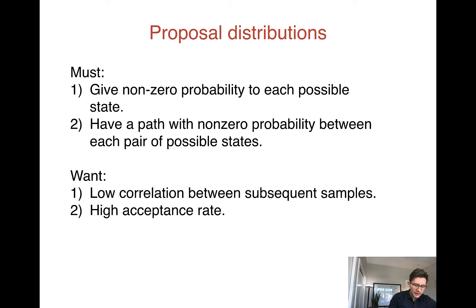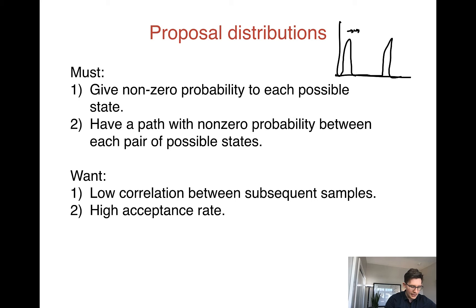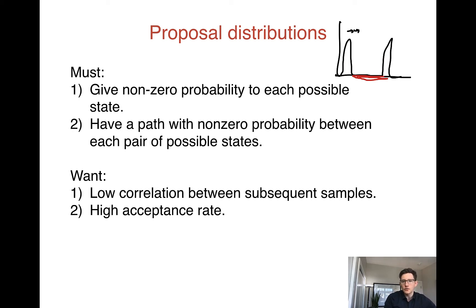You can see why that would be an issue. Let's say we have a distribution with two clusters, and our proposals just take us small distances in either direction. If the middle has actually zero probability, we're going to propose moves that go there, see that they have zero probability, and reject those moves. We'll stay in one cluster and never end up in the other, meaning we would never sample from that second cluster.